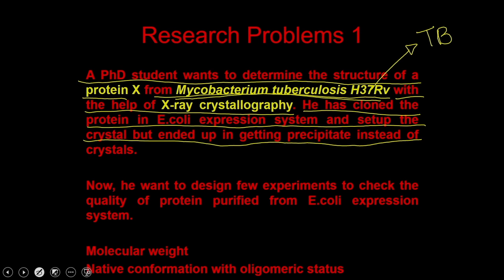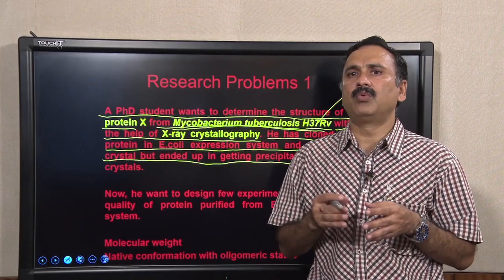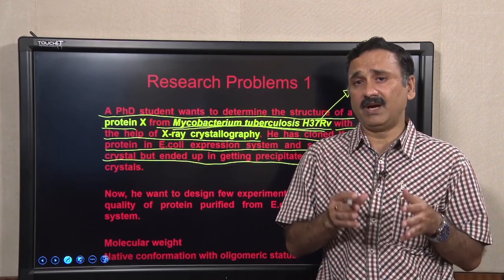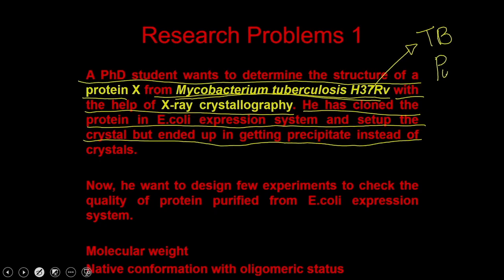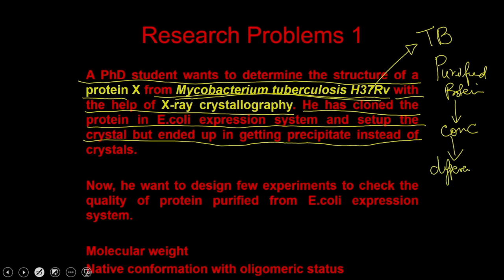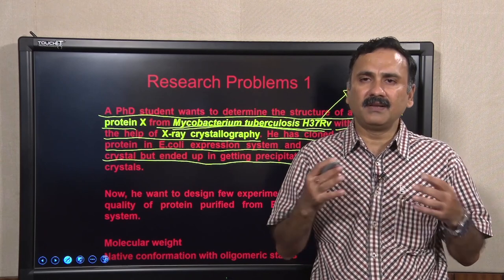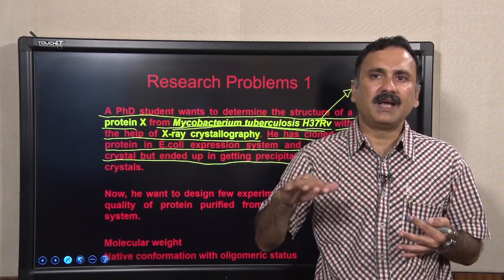In a typical X-ray crystallography structural determination, you first isolate proteins in large quantity in purified form. Then you concentrate these proteins so they reach a concentration where crystallization begins, and incubate them in different crystallization conditions. In any of these conditions, the protein precipitates in a regulated fashion and crystallizes to give you crystals.